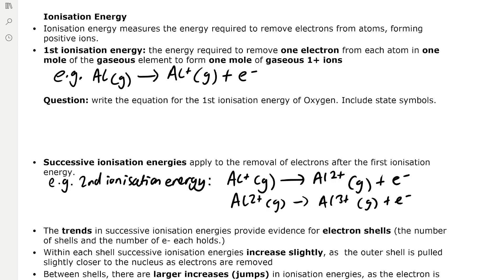Question: write the equation for the first ionisation energy of oxygen — include state symbols. Never forget to use state symbols when writing equations for ionisation energy. For oxygen, we have a gaseous atom of oxygen going to oxygen 1+ gaseous, and losing an electron.